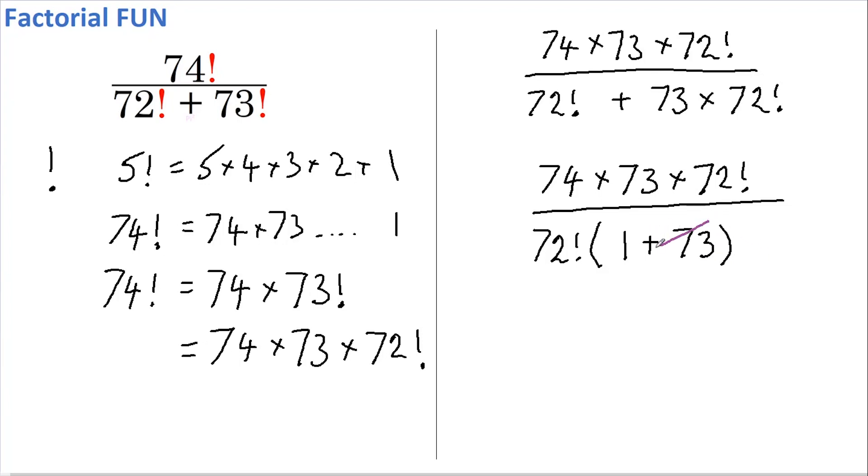73 plus 1 is 74. That cancels with 74 here. And 72 factorial cancels with 72 factorial.